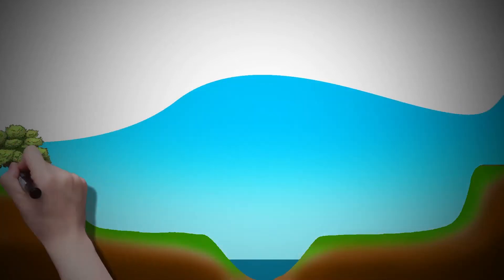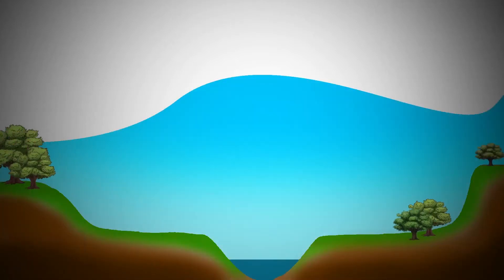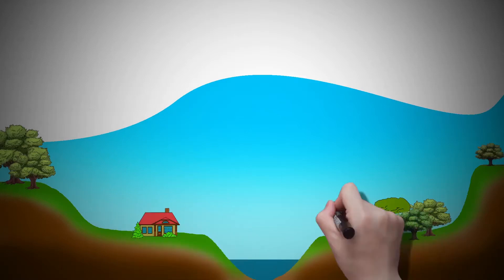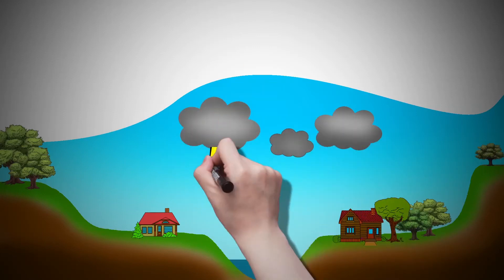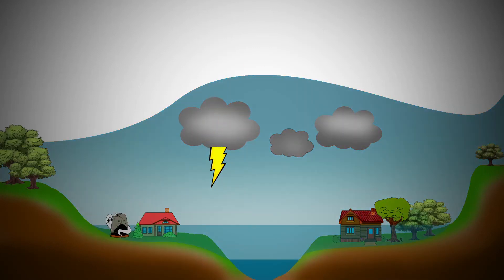Floodplain mapping identifies the boundaries around a body of water that would be considered hazardous in a flood event. If a person builds on an area identified as part of a floodplain and there is a storm event, in extreme cases there could be loss of life and at the very least the structure could be damaged.